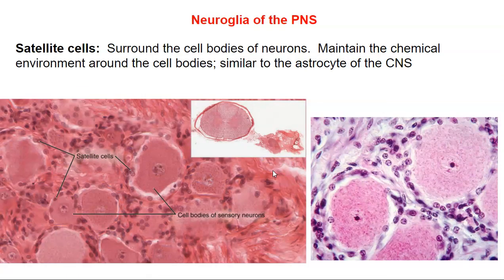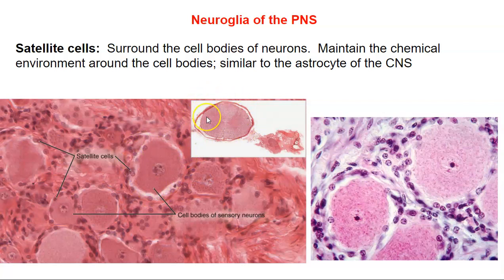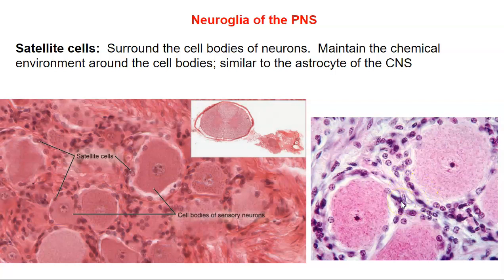Our last type of cell is the satellite cell — the second type of glial cell in the peripheral nervous system. Satellite cells surround the cell bodies of neurons. Just lateral to the spinal cord are the dorsal root ganglia, where you find the cell bodies of sensory neurons, and surrounding those cell bodies are the satellite cells. They perform a function similar to the astrocyte in the sense that they maintain the chemical environment around these cell bodies in the peripheral nervous system.